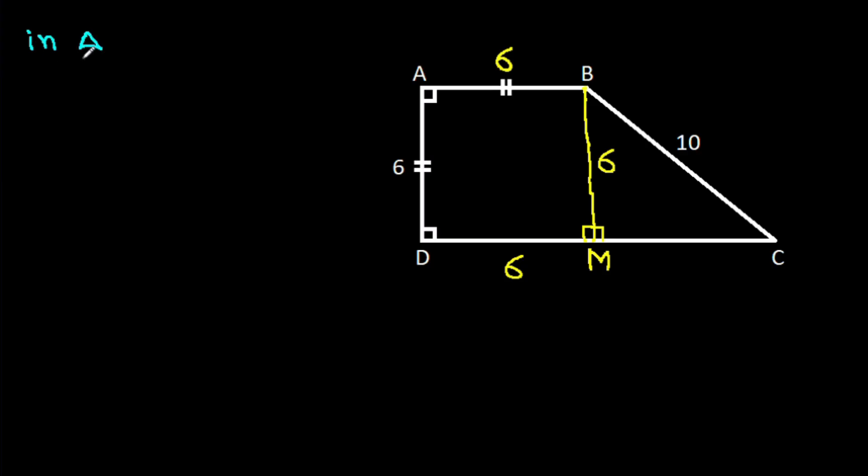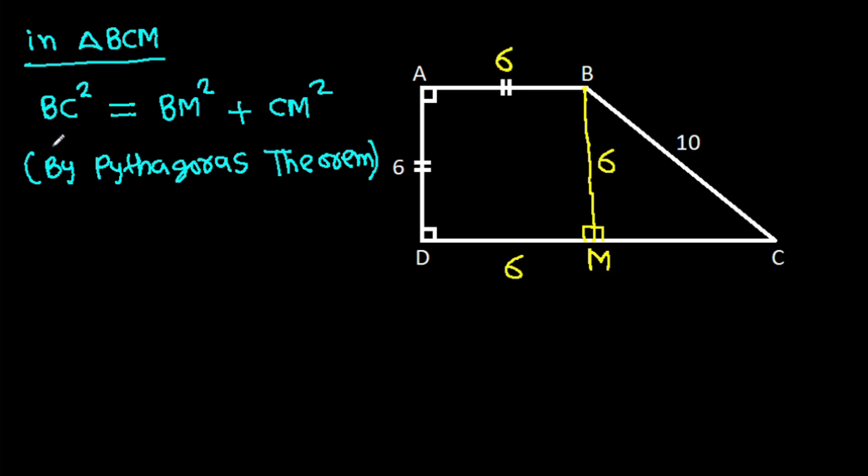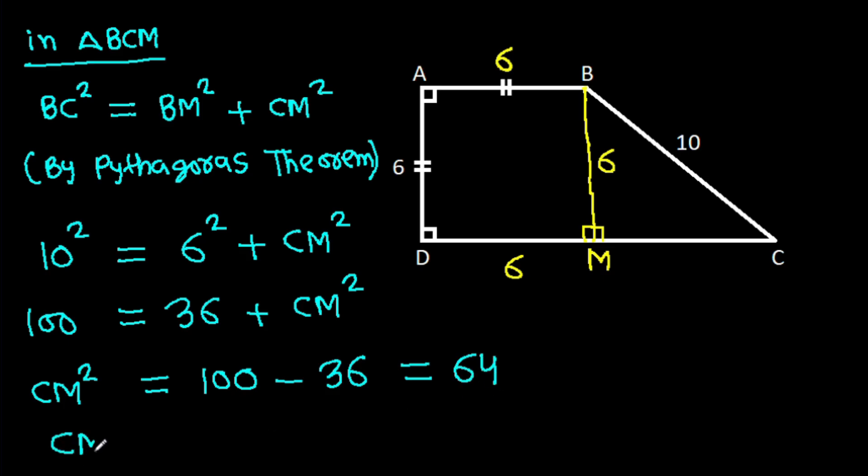And in triangle BCM, BC square, it will be BM square plus CM square by Pythagoras theorem. And BC is 10 squared. It is equal to BM is 6 squared plus CM squared. And 100, it is 36 plus CM square. So, CM square, it will be 100 minus 36, that will be 64. That means CM, it will be 8. CM is 8.